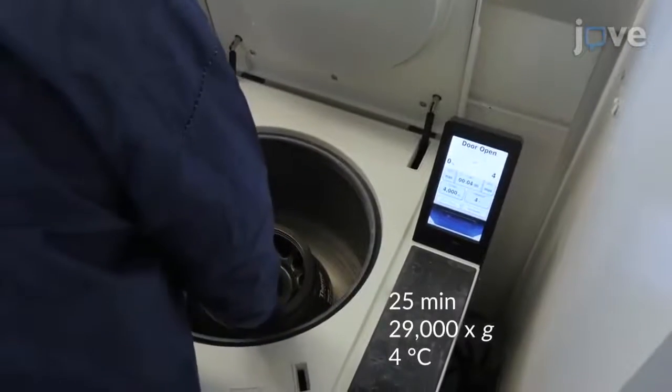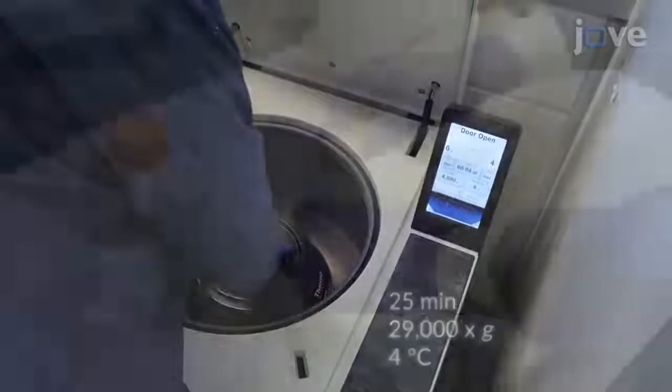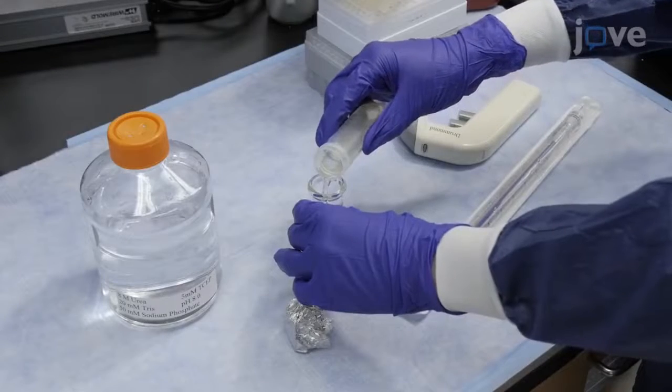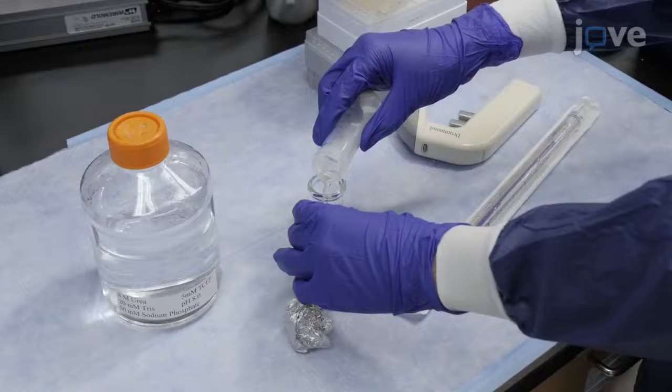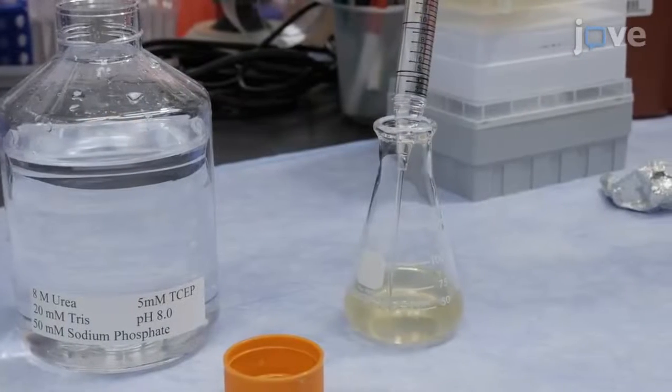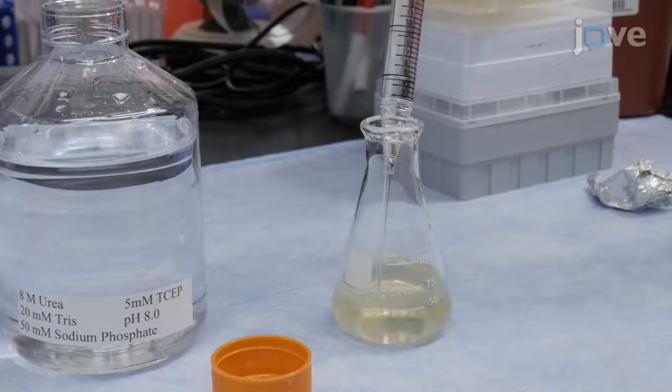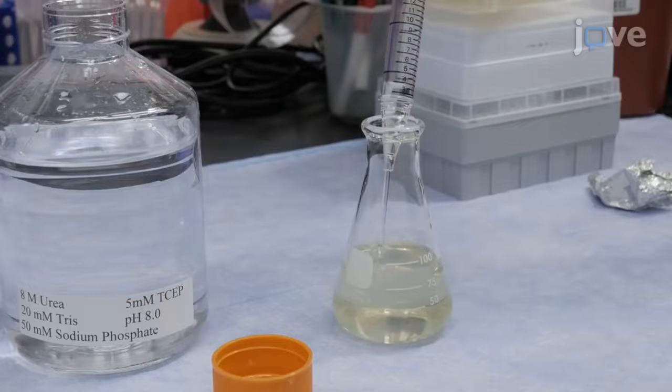Centrifuge the cellular lysate to generate a clarified supernatant and transfer the supernatant to a sterile 150 milliliter flask. Then bring the sample up to a final volume of 100 milliliters with fresh imidazole-free buffer.